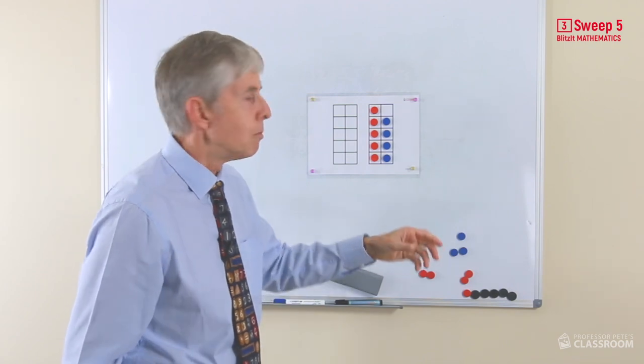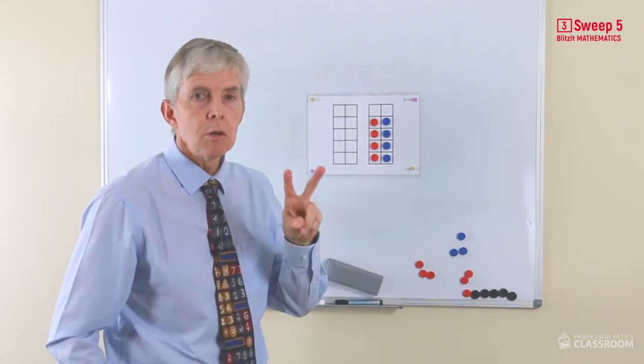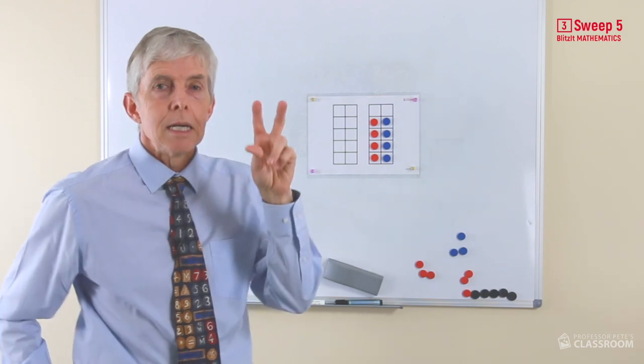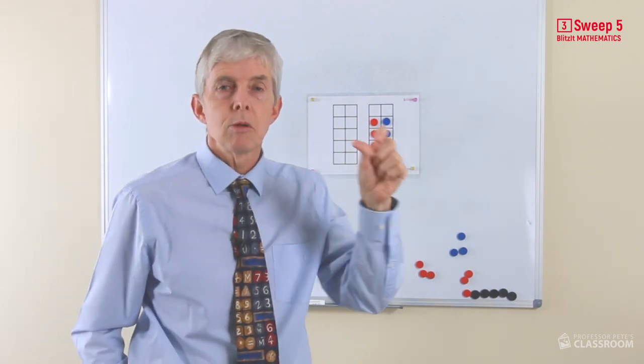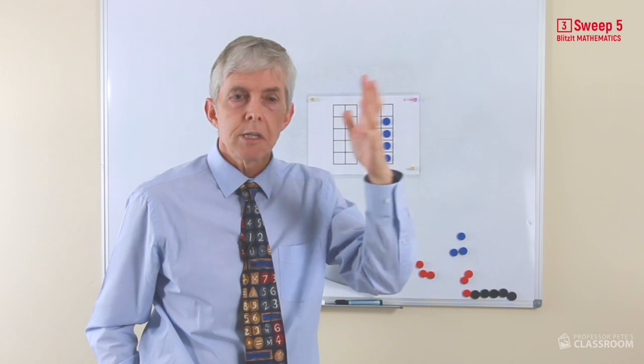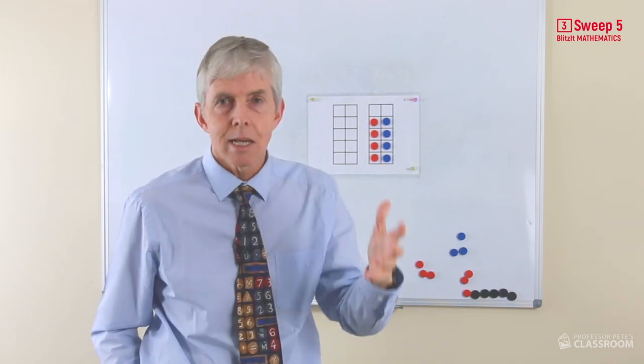Obviously it's just one more. In each of these number facts, the two numbers that you're adding together will be adjacent to each other in the sequence of counting numbers. So two plus three, six plus seven, eight plus nine, one plus two, etc.